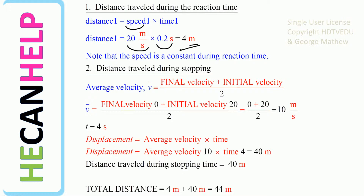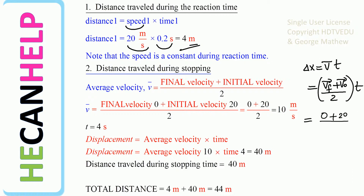Now, once we start applying the brakes, what is the distance traveled? For that, we use displacement equals average velocity times time. To find the average velocity, it is final velocity plus initial velocity divided by 2. Final velocity is 0 — it comes to a stop. Initial velocity is 20. So average velocity is 0 plus 20 divided by 2, which equals 10 meters per second. Time is 4 seconds. So displacement is 10 times 4, which is 40 meters.